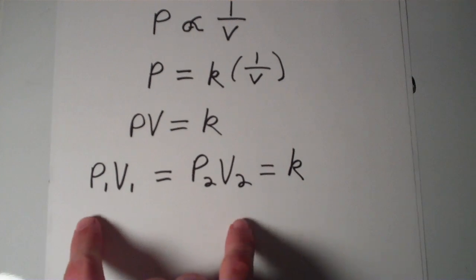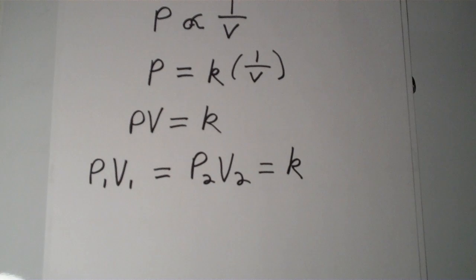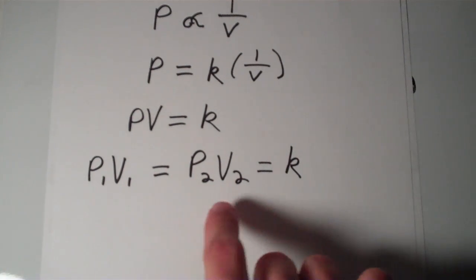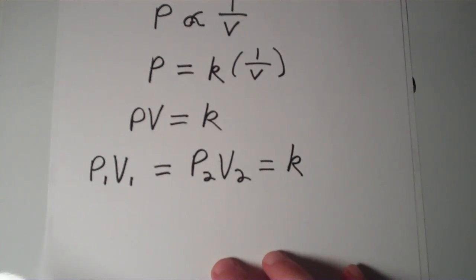So this two-point form of the Boyle's Law equation is helpful because it can be used to solve problems. Any three of these things, P₁, V₁, P₂, or V₂, if we know any three of those, then we can solve for the unknown. So let's go through a problem.